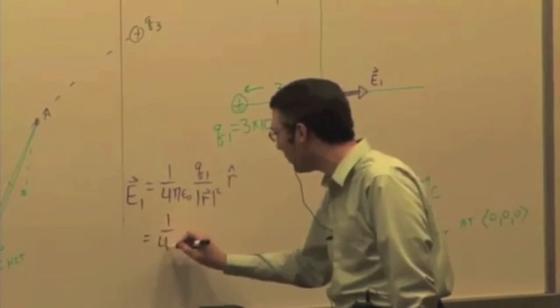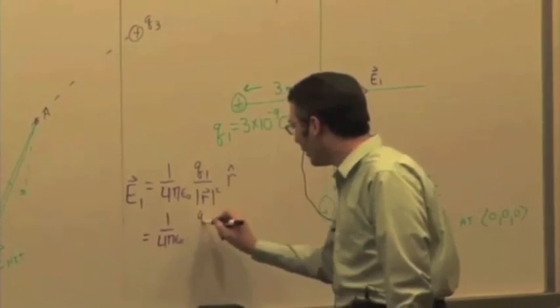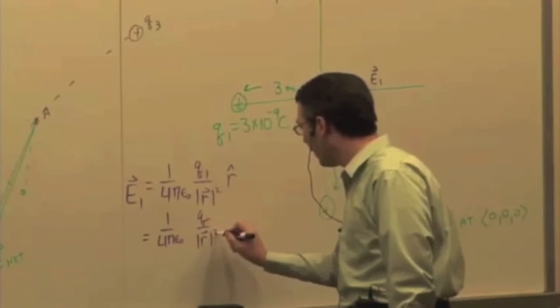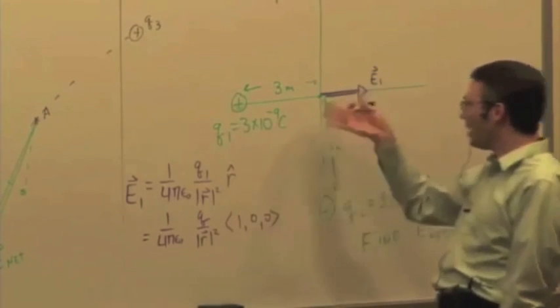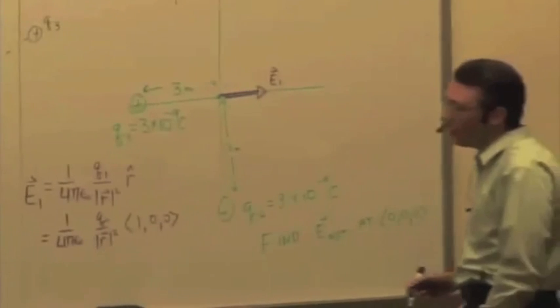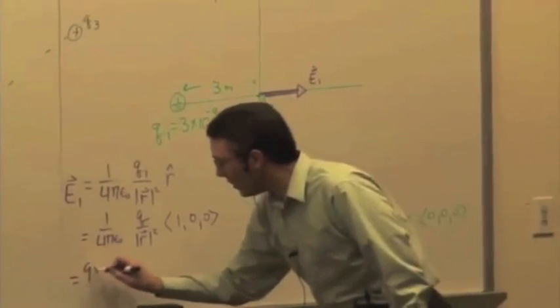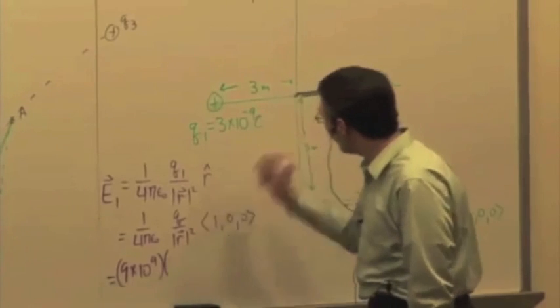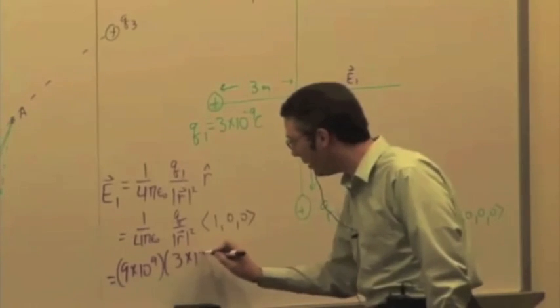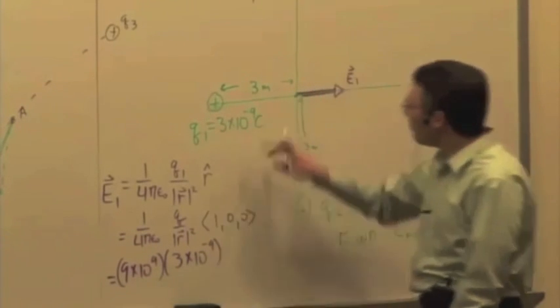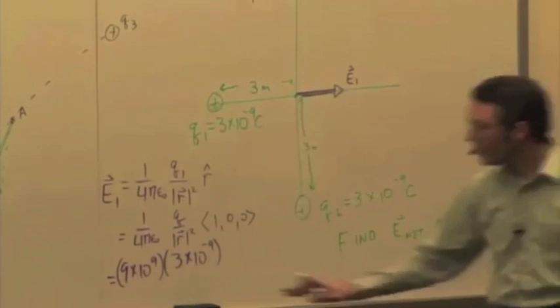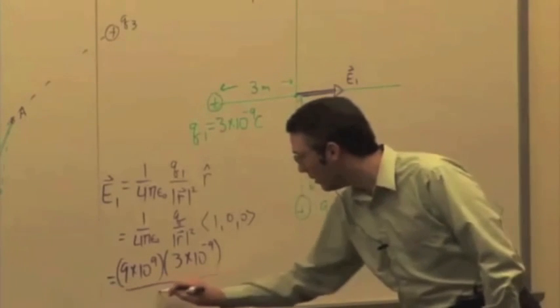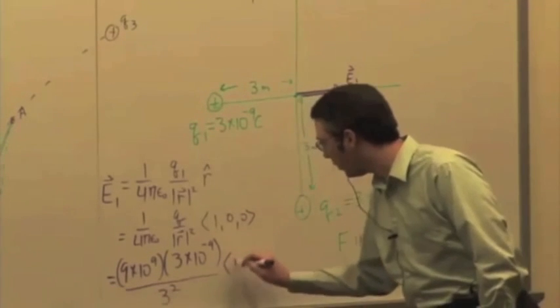So, we know this has got to be 1, 0, 0, right? So, we have 1 over 4 pi epsilon 0, Q over R squared times 1, 0, 0, okay? So, we can just eyeball this and figure that out. So, that's going to be 9 times 10 to the 9th times 3 times 10 to the minus 9 divided by the distance is 3 meters. So, we divide by 3 squared, 1, 0, 0.